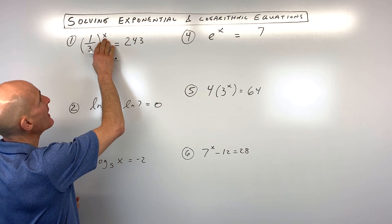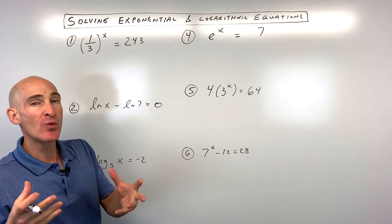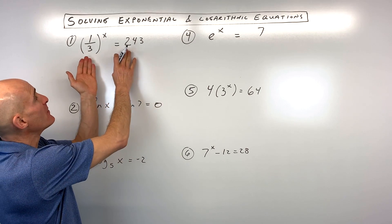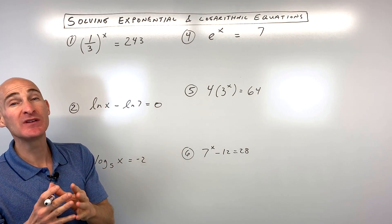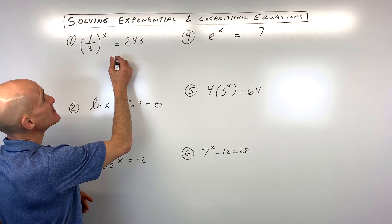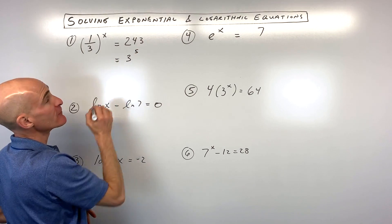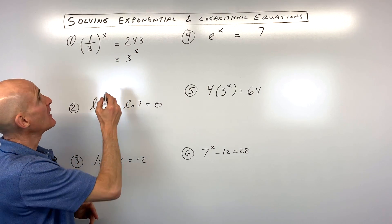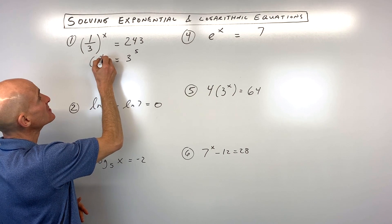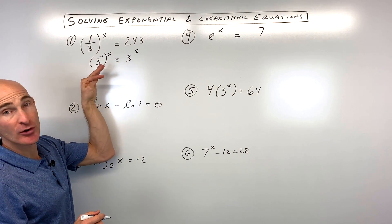We've got one-third to the x power equals 243. What you want to try to do first is see if you can get the bases on both sides of the equation to be the same. 243 is really 3 to the fifth power, and one-third is 3 to the negative 1 power, because that's the reciprocal.